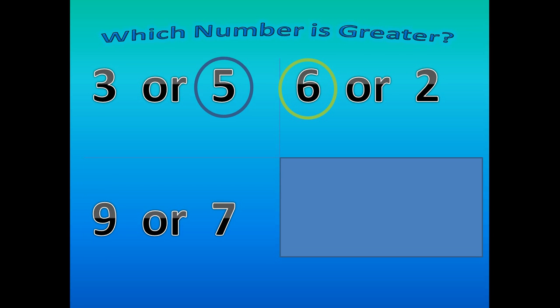Nine or seven. Which number is greater? Nine. Nine is bigger or greater than seven.